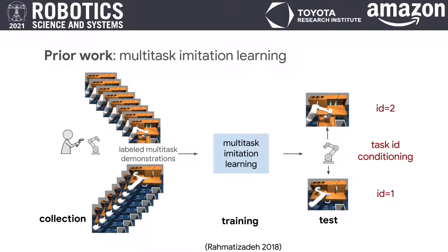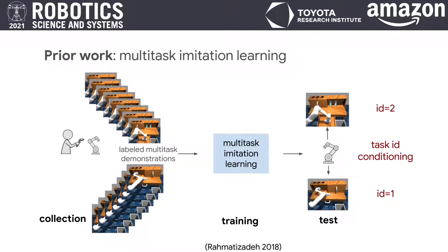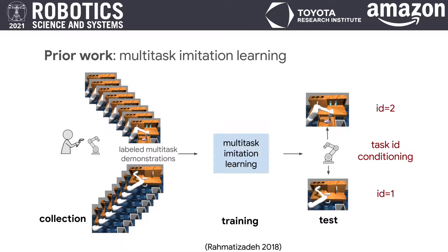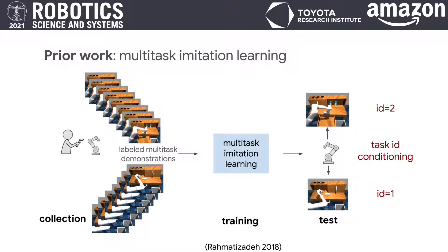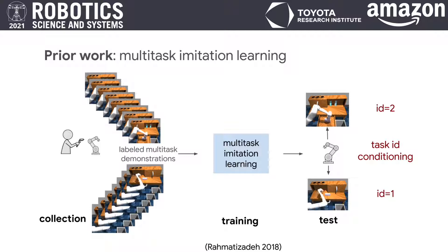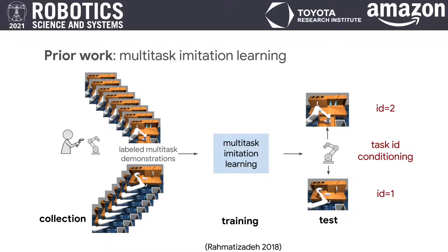Traditionally, learning multiple skills with imitation involves large numbers of curated demonstrations for each task and mechanisms like one-hot task IDs at test time. Unfortunately, when scaling up to a large number of skills, these collection requirements are often too expensive and this conditioning too inflexible.